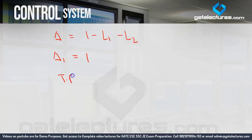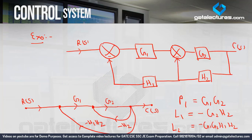The transfer function is P1·delta1 upon delta. You can clearly see the transfer function is calculated very easily via signal flow graph. So this video on block diagram to signal flow graph conversion is very useful. Whenever a question is in block diagram form, directly convert it to signal flow graph and do your calculation. Thank you.